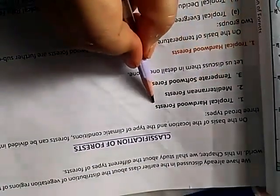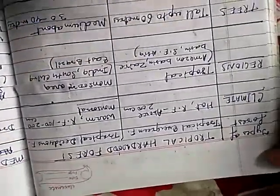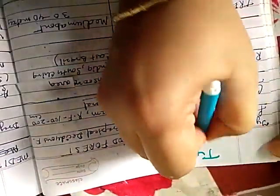Chapter 3: Natural Resources, Vegetation and Wildlife. We are learning the classification of forests. We have already learned about the tropical hardwood forest, the tropical evergreen and deciduous forest, the Mediterranean forest, and the temperate softwood forest. Now let's revise this with the help of a chart. I have prepared a chart showing types of forest.